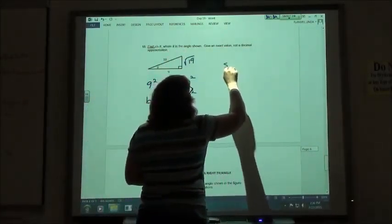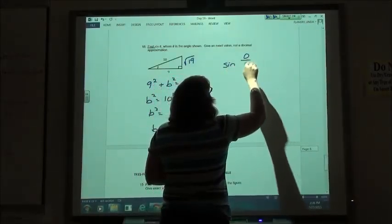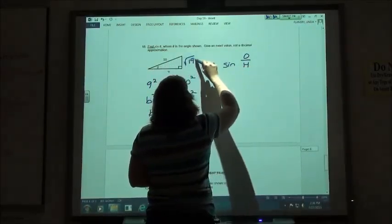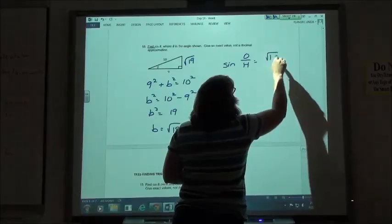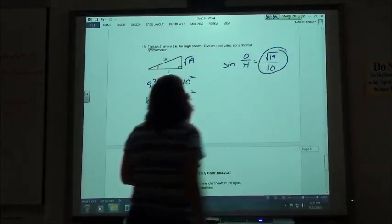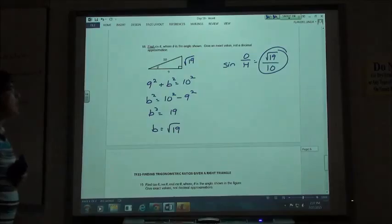And we're doing the sine. Sine is the opposite over hypotenuse. The opposite is the square root of 19. The hypotenuse is 10. So we get square root of 19 over 10 for our answer.